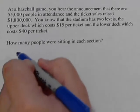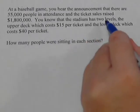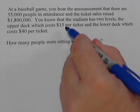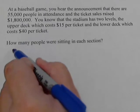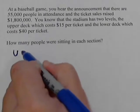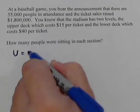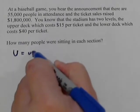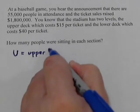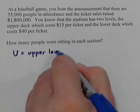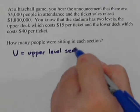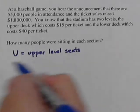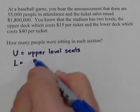The numbers we're looking for are the upper level and the lower level counts. So let's let U stand for the number of upper level seats, and we will let L stand for the number of lower level seats.